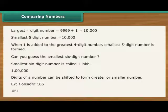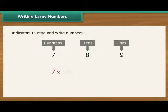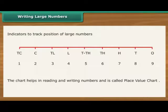Digits of a number can be shifted to form greater or smaller numbers. Writing large numbers. Sometimes, large numbers are so large that it becomes difficult to keep track of. Then, it helps to use indicators to read and write large numbers. In a decimal number system, the value of a digit depends on its place or position in the number. Each place has a value of 10 times the place to its right. It can be extended to crores. The chart helps in reading and writing numbers and is called place value chart.